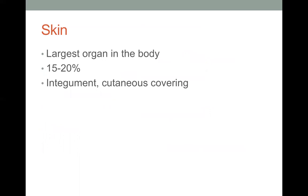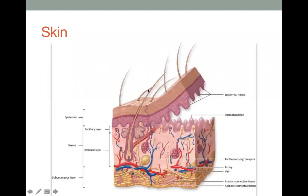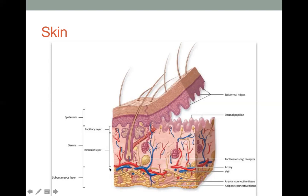As we all know, the skin is the largest organ in the body. It comprises 15 to 20 percent of the total body weight. Its function is for integument and cutaneous covering. The epidermis has five layers, the dermis has two layers — the papillary layer just beneath the epidermis and the reticular layer — and the subcutaneous layer is not a layer of the skin; it is where adipose tissue is found.